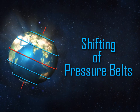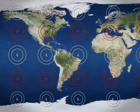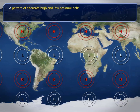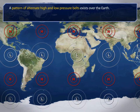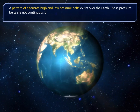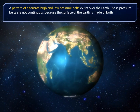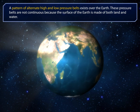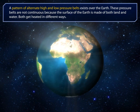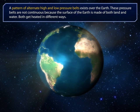Shifting of pressure belts. A pattern of alternate high and low pressure belts exists over the earth. These pressure belts are not continuous because the surface of the earth is made of both land and water, and both get heated in different ways. Let's have a look at the four major pressure belts.